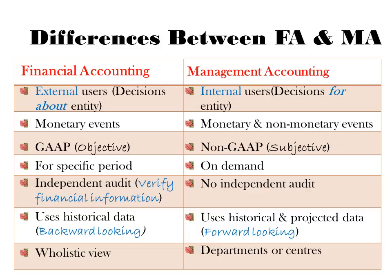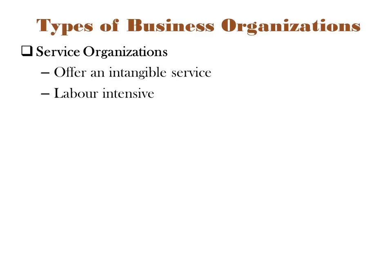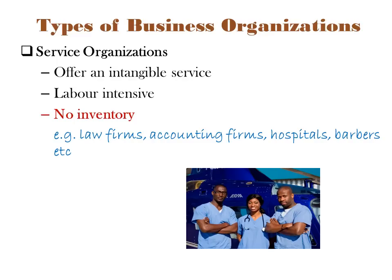Next, we turn to look at the types of business organizations. We have three types. Firstly, we have service organizations. These organizations tend to offer something intangible — a service that is intangible. As a result, these organizations are only said to be labor-intensive. Service organizations carry no inventory. Typical examples would be law firms, accounting firms, hospitals, IT companies, and cellular phone companies.